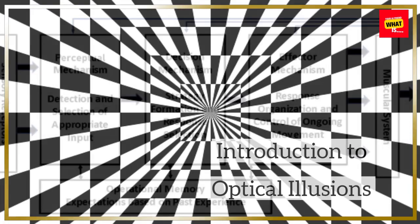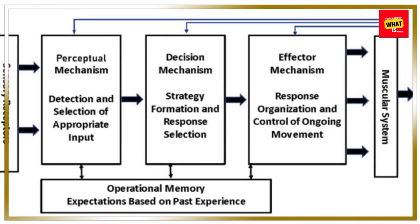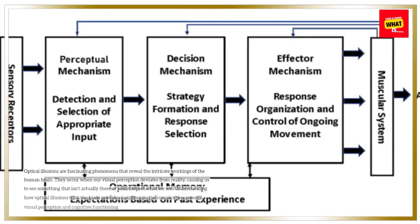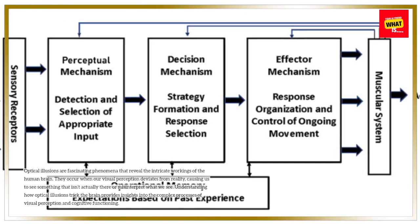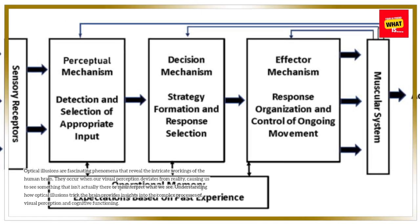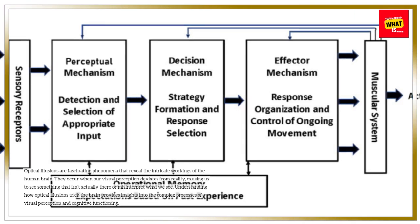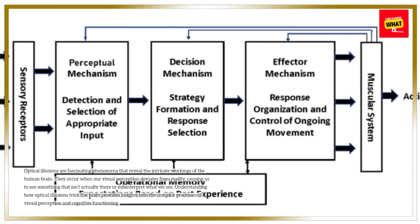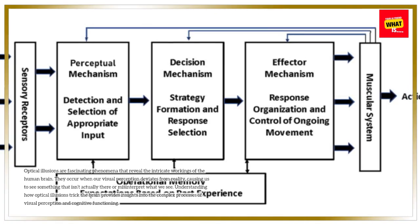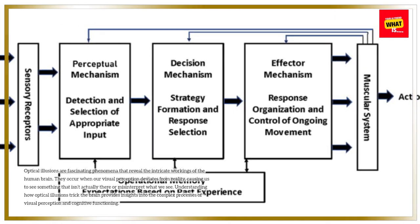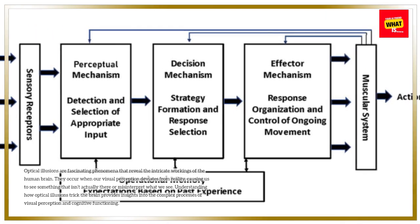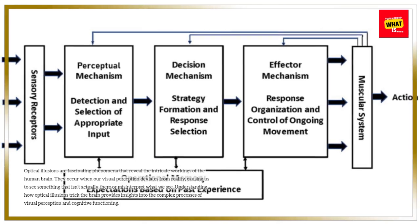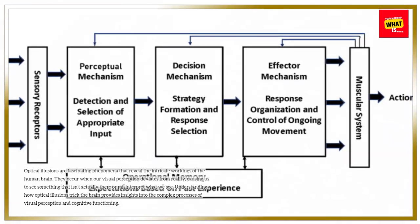Introduction to optical illusions. Optical illusions are fascinating phenomena that reveal the intricate workings of the human brain. They occur when our visual perception deviates from reality, causing us to see something that isn't actually there or misinterpret what we see. Understanding how optical illusions trick the brain provides insights into the complex processes of visual perception and cognitive functioning.